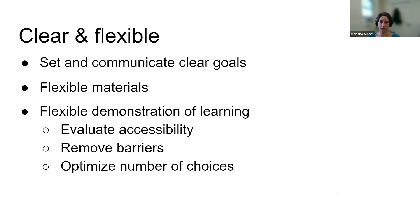As we strive for universal design for learning in our courses, we want to set and communicate clear and flexible goals — making sure all students know the direction they're going, what they're trying to learn, and how they're going to get there. We want to provide as much flexibility in materials as possible. With something like Ally, we're giving students the option to have both a text-based and an audio-based learning material. In designing courses, you can take that further by finding videos for learning materials and also by providing flexibility for ways for students to demonstrate their learning — can students use different forms of representation to show they've met the learning outcomes?